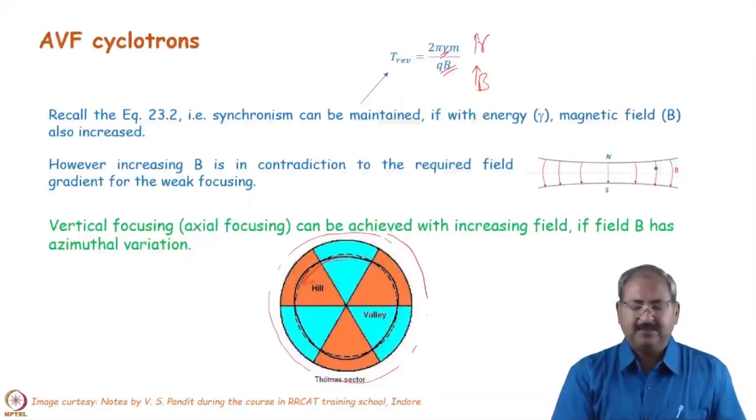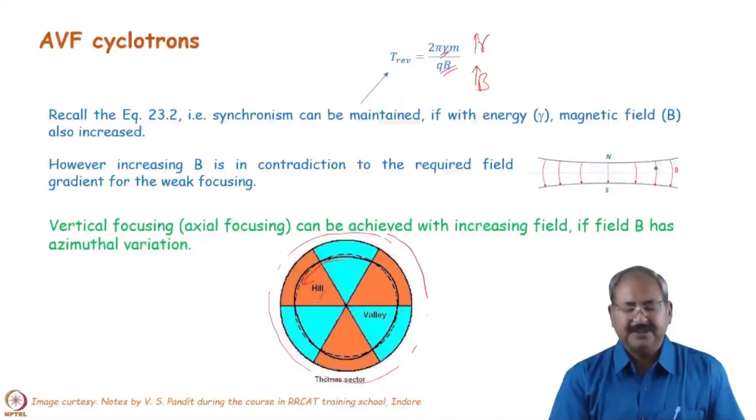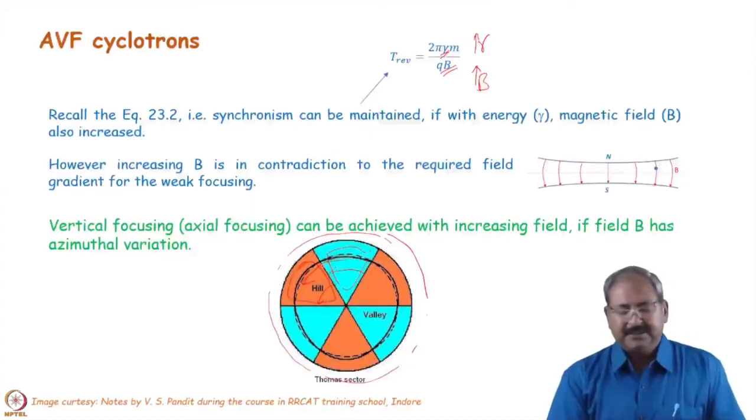Here, pole caps are closer to each other. We say this is the hill. And here, pole caps are further from each other. So, this is the valley. In this region, magnetic field will be lower. In this region, magnetic field will be higher. So, where the magnetic field will be higher, this region increases with radius. So, effectively, magnetic field becomes higher and higher at the outer poles.